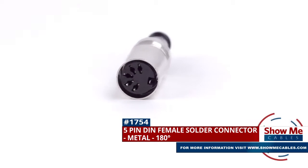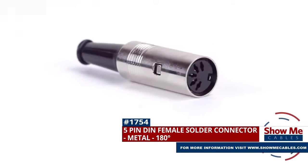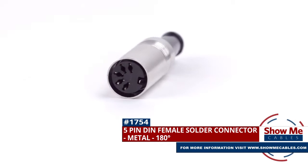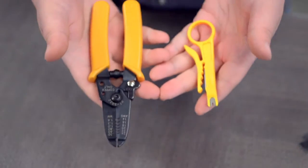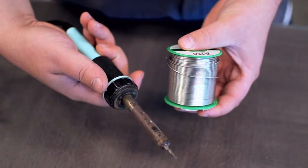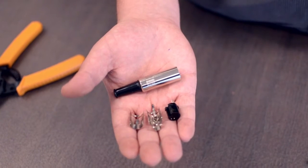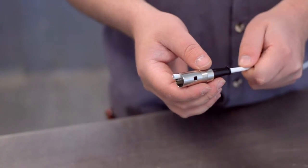This is the 5-pin DIN female solder connector. To install, you will need the following items: low voltage cable, wire strippers, solder and soldering iron, and the DIN connector. Start by inserting the boot over the jacket.